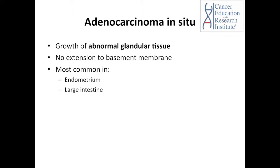Adenocarcinoma in situ is a growth of abnormal glandular tissue that may become malignant. However, the abnormal cells do not extend beyond the basement membrane. It is most common in the endometrium, which means the inner lining of the uterus, and it is also seen in the large intestine.